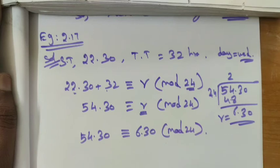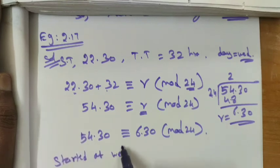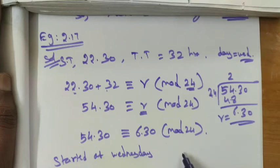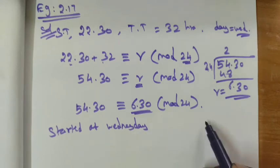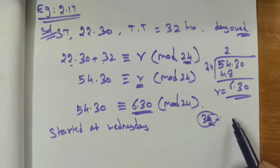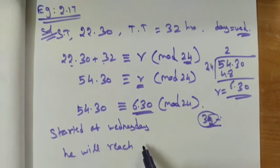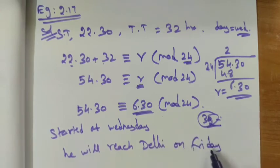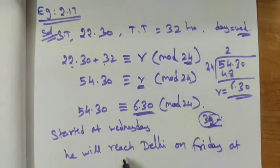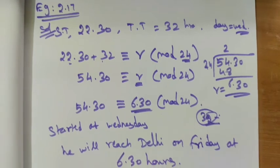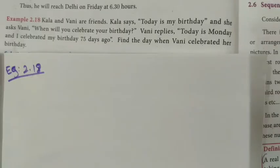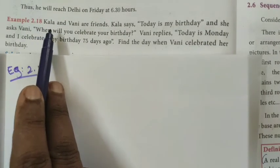So 32 hours: one complete 24 hours passes, moving on to Friday. After the 24 hours are complete, the next day is Friday. Therefore he reaches Delhi at 6:30 hours on Friday.